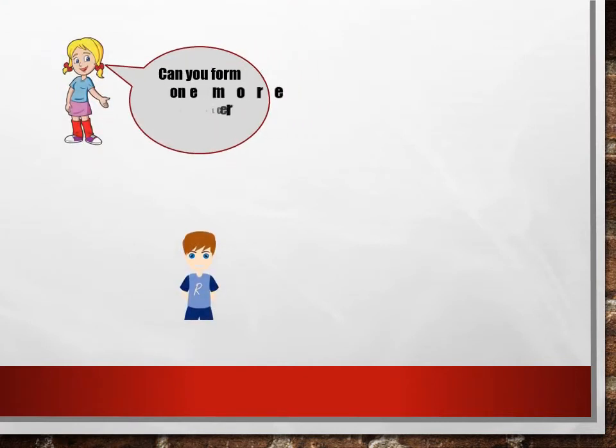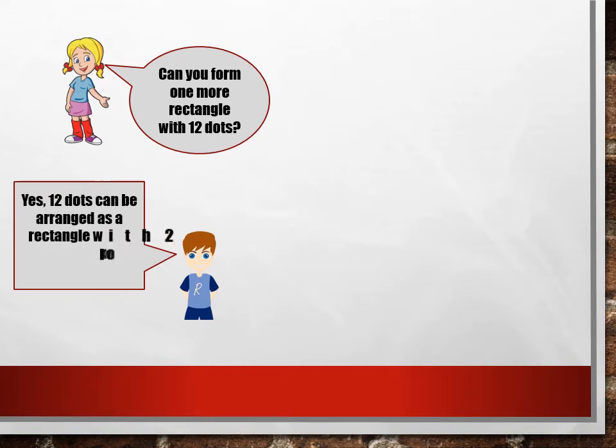Can you form one more rectangle with twelve dots? Yes, twelve dots can be arranged as a rectangle with two rows and six columns.